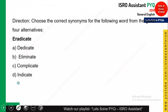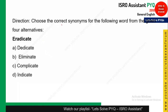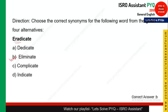The next question asks you to pick the correct synonym of the word 'eradicate.' This is a very simple one — you must have heard the statement 'we need to eradicate poverty,' which means we need to eliminate poverty. So 'eliminate' is the correct answer. Those candidates who chose option B are right.